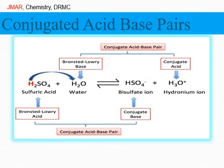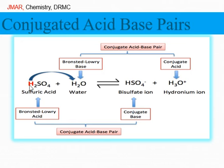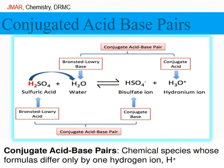Another example of a conjugate acid-base pair: in the equation, sulfuric acid + water gives bisulfate + hydronium ion. A proton is transferred from sulfuric acid to the water molecule to form bisulfate and hydronium ion. Since a proton is transferred between sulfuric acid and bisulfate, they are a conjugate acid-base pair. Similarly, water and hydronium ion — since a proton can be transferred between them — are also a conjugate acid-base pair. A chemical species whose formulas differ by only one hydrogen ion is called a conjugate acid-base pair.